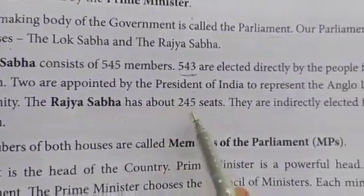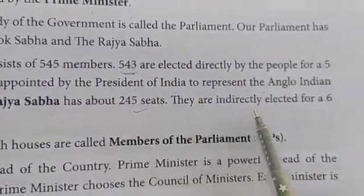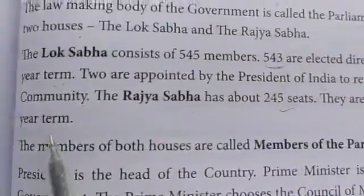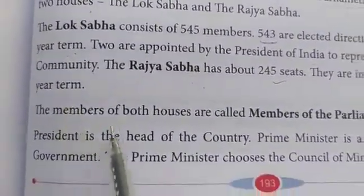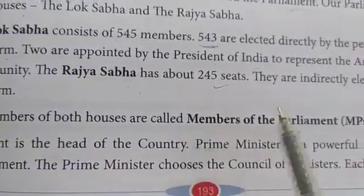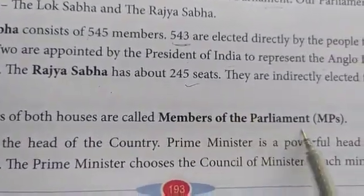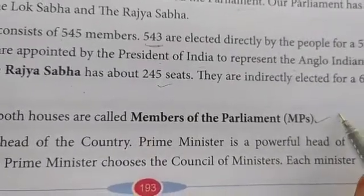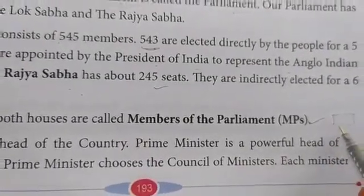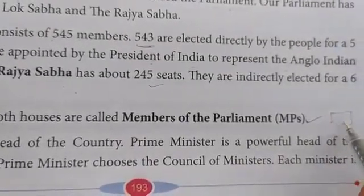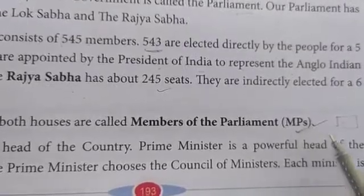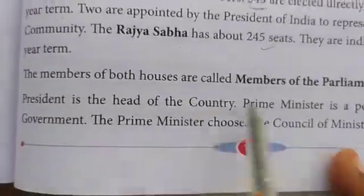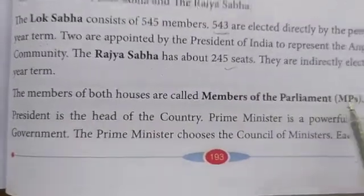Rajya Sabha has 245 seats and these are indirectly elected for every six years. The members of both houses are called Members of Parliament — MP. They are elected by the people.